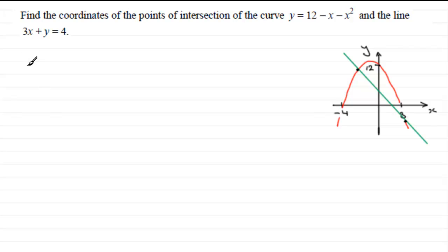So let's just put these equations down. We've got the curve, the parabola y equals 12 minus x minus x squared. We'll call that equation 1. And we've got the straight line which has equation 3x plus y equals 4. And that's equation 2.